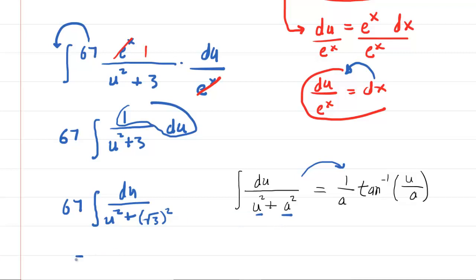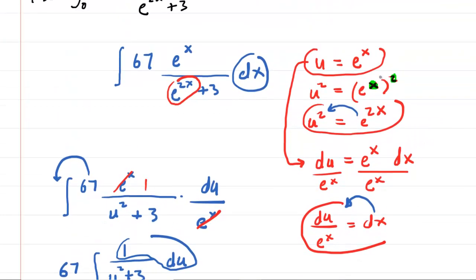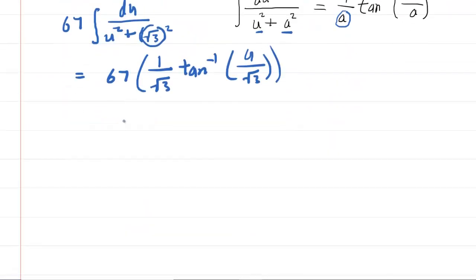Following this formula, we can now integrate. We would have 67 multiplied by 1 over our constant—our constant in this particular problem is square root 3—then we have the inverse tangent of our u over that same constant, square root 3. Let's not forget that u was equal to e to the x, so we need to replace the u with e to the x. We finally have 67 multiplied by 1 over the square root of 3, inverse tangent of e to the x over square root 3.